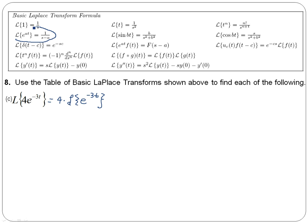The Laplace of e to the negative 3t is 1 over s minus a, where a is negative 3, or 1 over s plus 3. That gets multiplied by 4, and so our Laplace of 4e to the negative 3t is 4 over s plus 3.